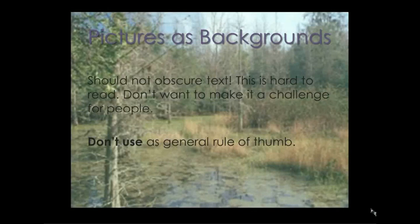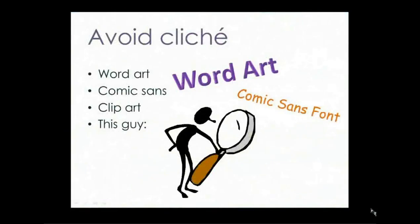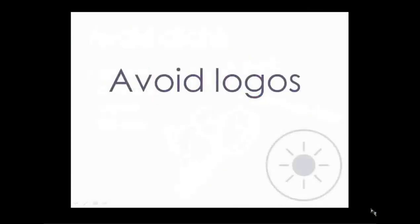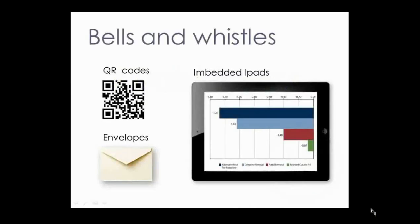Using pictures as backgrounds: as a general rule, do not attempt this unless your image is very subtle, low contrast, and unintrusive — the image should not obscure your text. Avoid clichés: word art, Comic Sans font, and clip art can detract from the professionalism of your poster. Make sure your graphics have meaning and are not decorative fluff. CTAC guidance is specific: logos and advertising materials should not be used. If you are feeling adventurous, embedded iPads have been used before in CTAC posters to great success — they can loop animations or photos to demonstrate change over time. QR codes can link your poster to additional web-based information, and we suggest attaching an envelope for business cards.